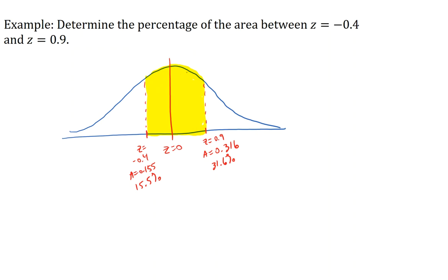So 31.6 percent is the area from the mean over to 0.9. So that's 31.6 percent. 15.5 percent is from the mean over to negative 0.4. So what is the area of the yellow region? Well, I have to add those two areas together. That would be 42.1 percent. So 42 percent of the data values are between those two z-scores.